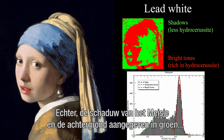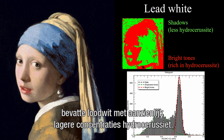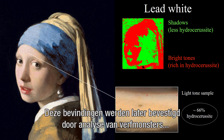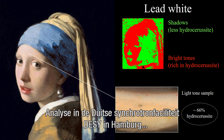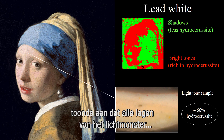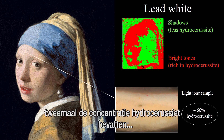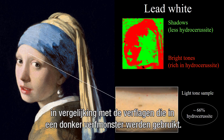However, the girl's shadow and the background, indicated in green, contained lead white with significantly lower concentrations of hydrocerussite. These findings were later confirmed by analysis of paint samples taken from a light and a darker part of the girl's head. Analysis at the German synchrotron facility DESY in Hamburg showed that all layers of the light sample contained twice the concentration of hydrocerussite compared to the paint layers used in the dark paint sample.